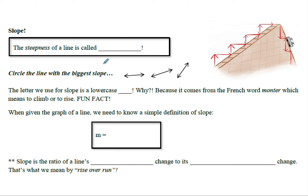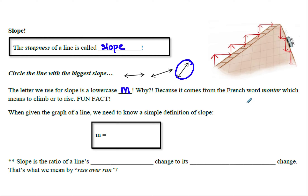Let's take a look at some practice slope problems. The steepness of a line is called slope. The line with the biggest slope is the steepest one — the one closer to going straight up and down rather than side to side. The letter we use for slope is a lowercase m, which comes from the French word 'monter,' meaning to climb or rise. Sometimes you'll see something like 'm equals' when they're asking for the slope.